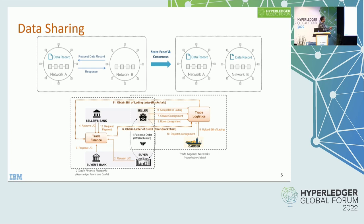Ordinarily, network B would have a process where a trusted client fetches the data record from network A and supplies it as a transaction. Instead, if we can have a process by which network B can in an institutional way request this data record from network A, and get a response generated along with a state proof using network A's consensus, and then network B validates that information using its own consensus before consuming it — that would be great. We've created a thick pipe between the two networks.